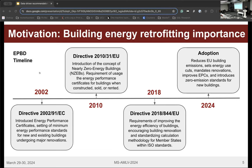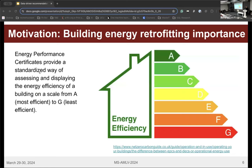The directive was revised several times, with each revision introducing new standards for both new buildings and existing ones, since most will still be in use 30 years later. The latest revision contains plans up to 2050. One key point introduced by the EPBD was the Energy Performance Certificate — a standardized way of assessing and displaying energy efficiency of buildings on a simple scale from A (most efficient) to G (least efficient).